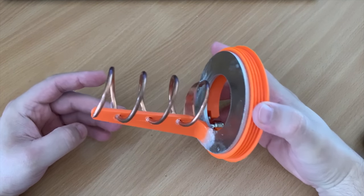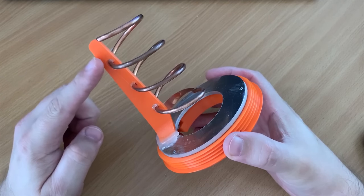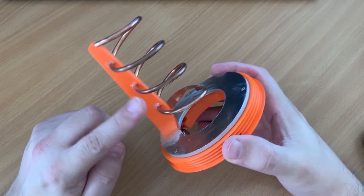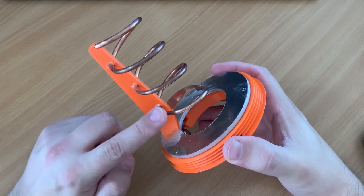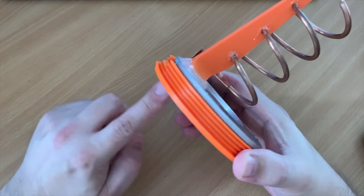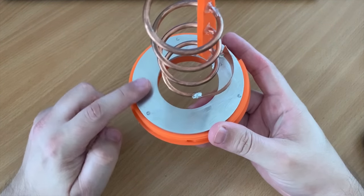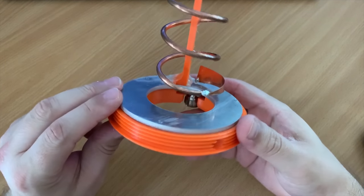Now here we have the finished article. So the 3D printed parts is this part here, this is to support the 3.5 turn helix antenna, and then we have this base plate here which is like a reflector base plate that the reflector attaches to. This is the reflector, this is made out of aluminum.